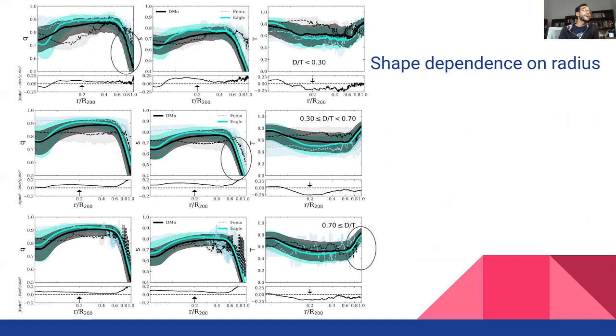So in this figure, we are showing the shape parameters Q, S, and the triaxiality median values versus the radius. For Eagle in solid lines and for Phoenix halos in dashed lines.